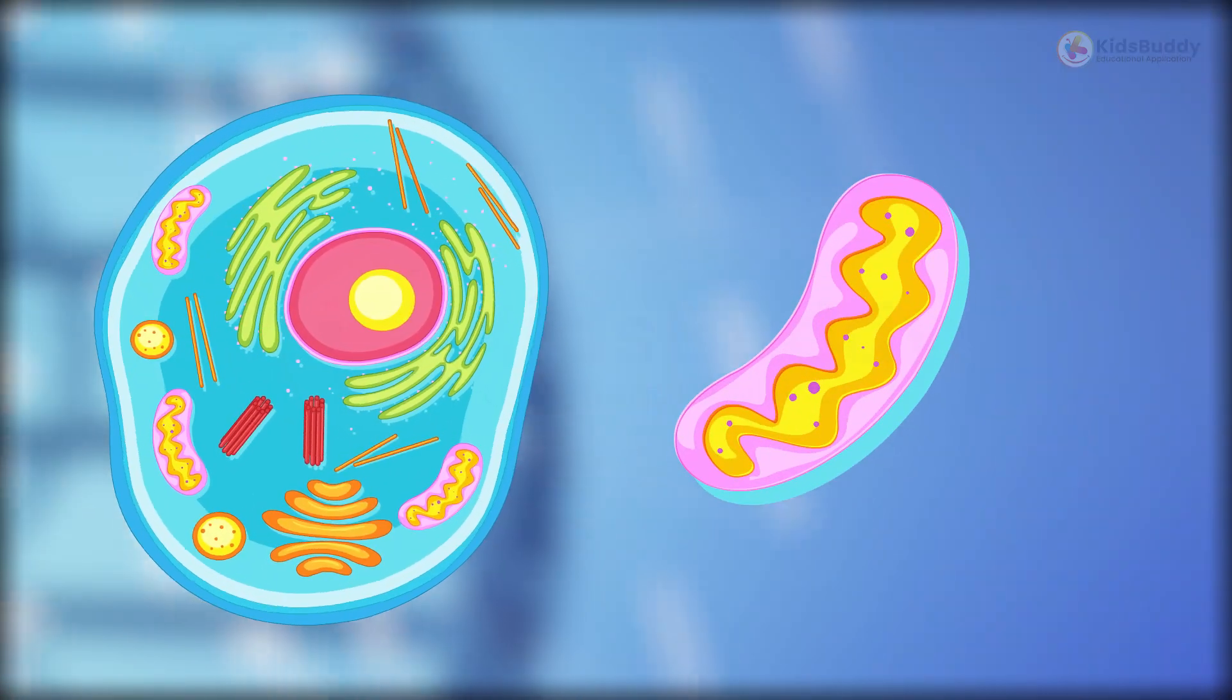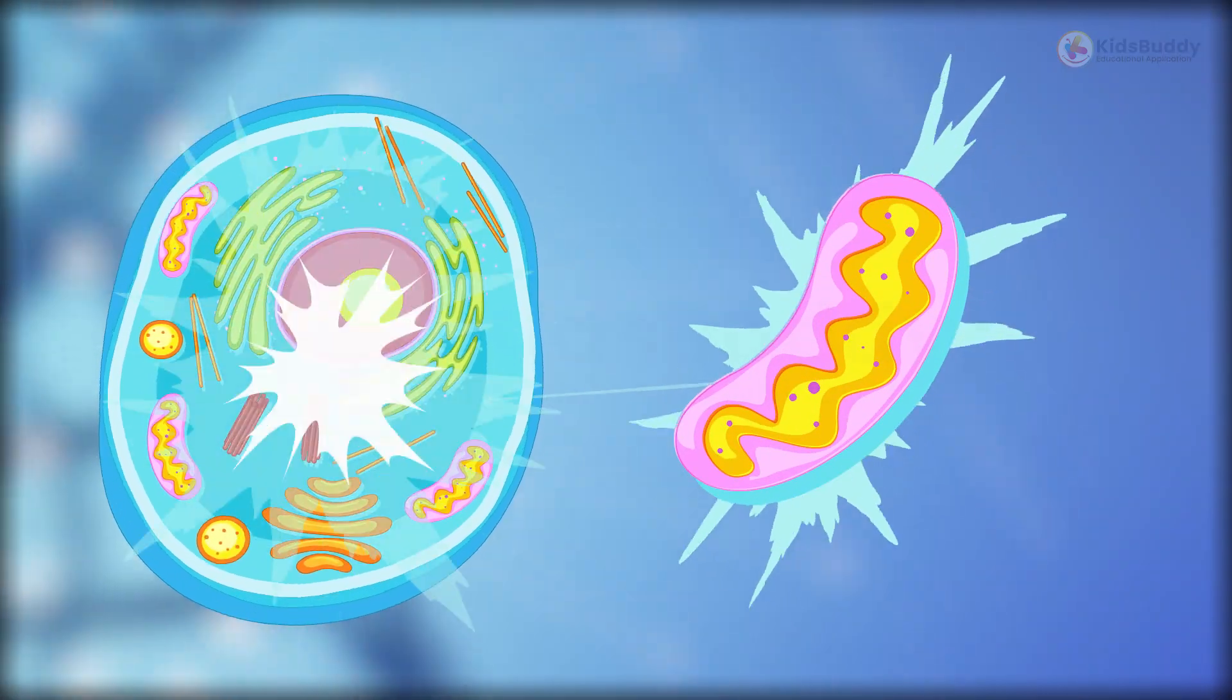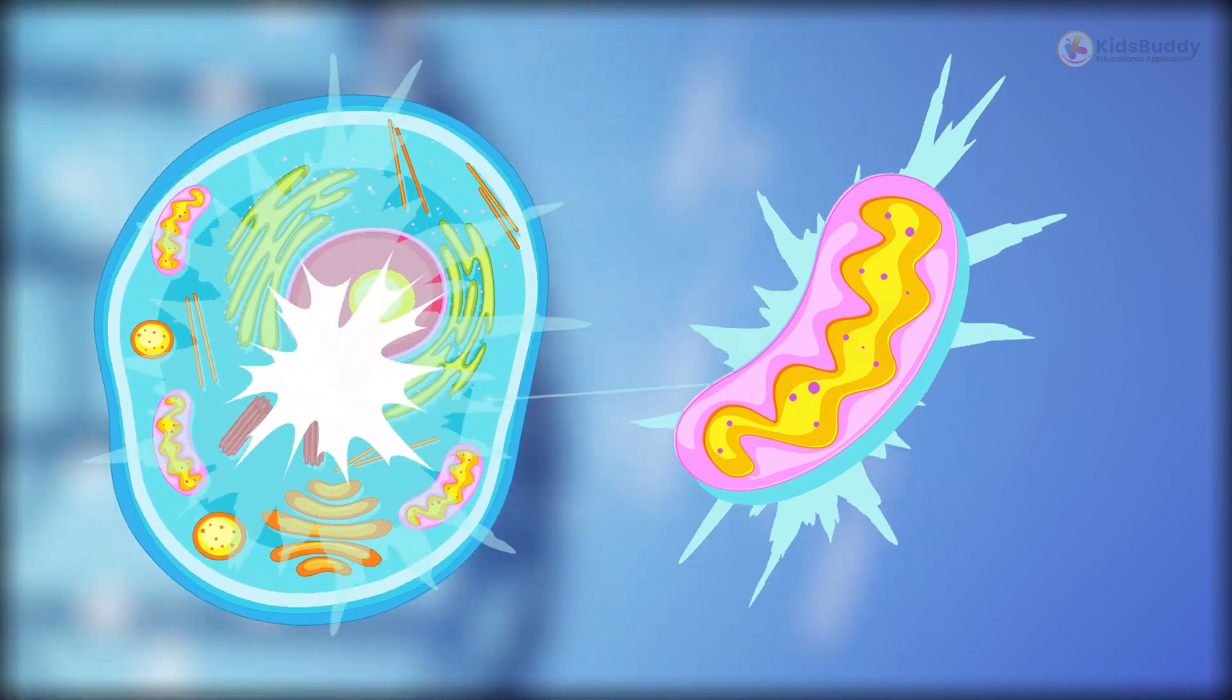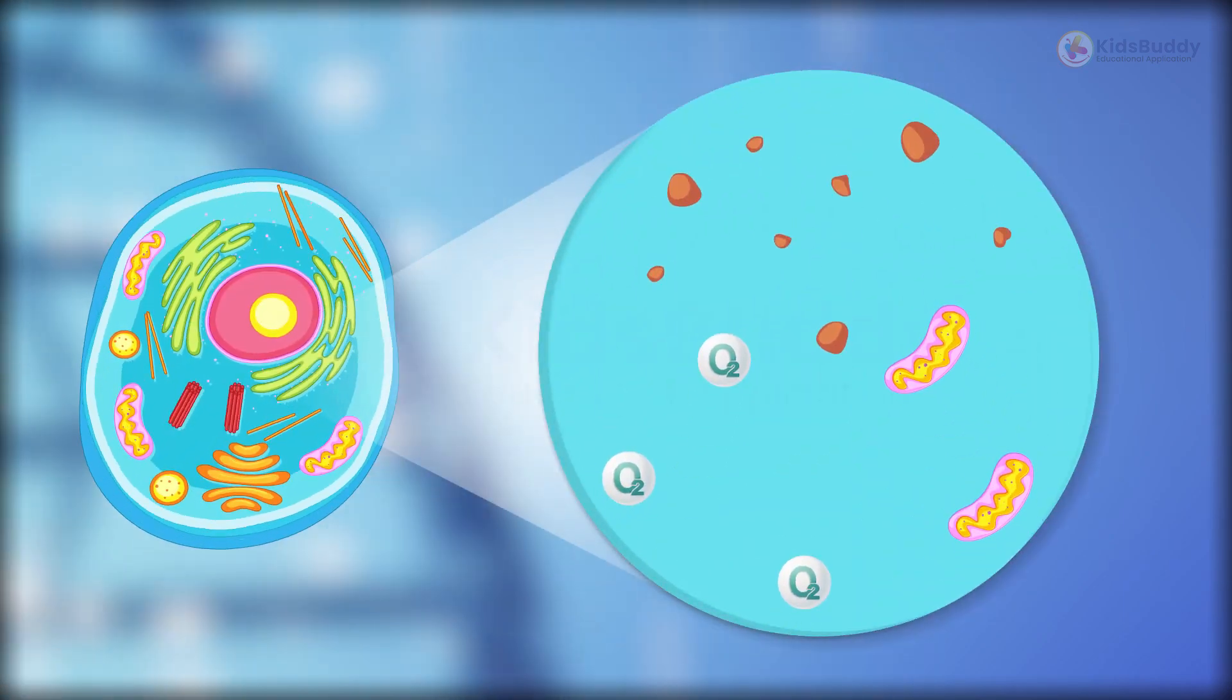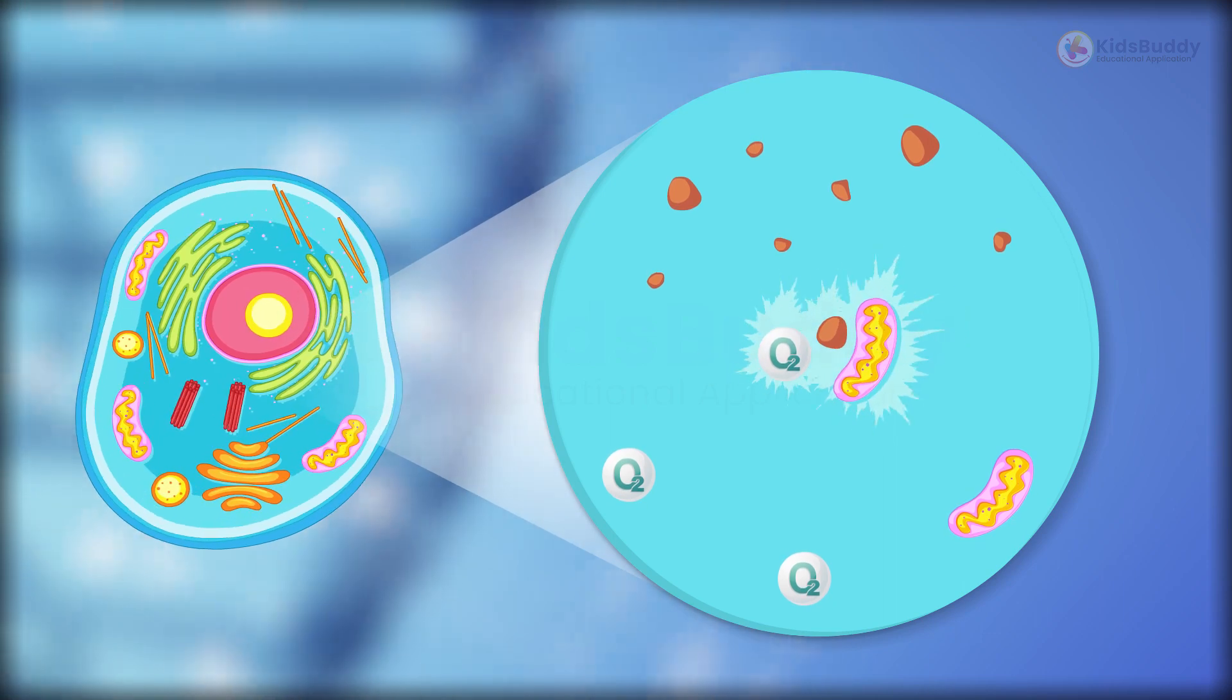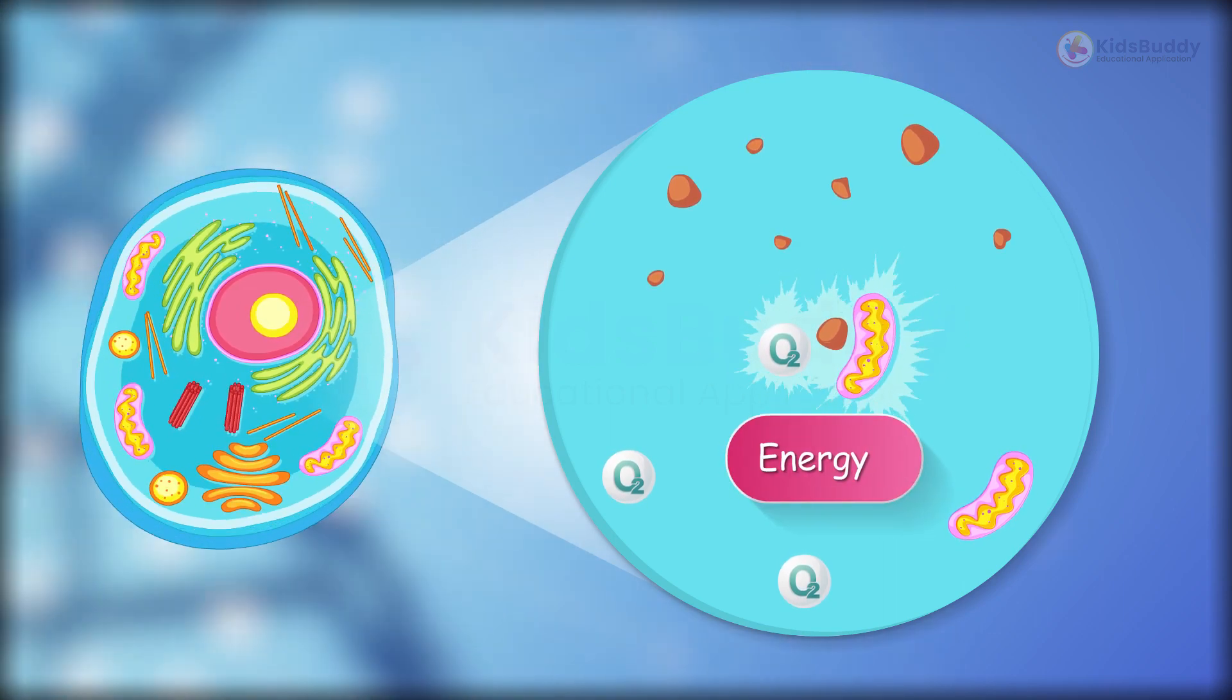Mitochondria is the powerhouse of the cell. It provides all the energy the cell needs. When we eat food, the digested part of the food reacts with oxygen in the mitochondria to create energy for that cell.